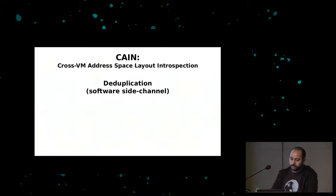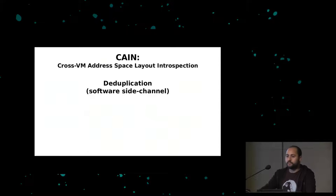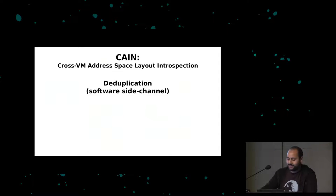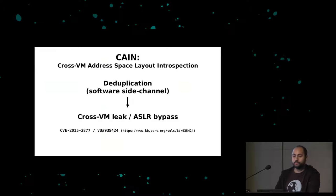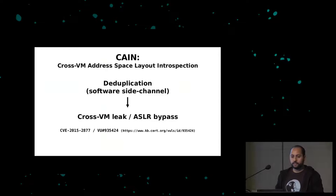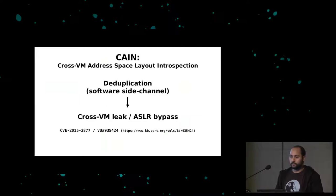CANE is Cross-VM Address-based Layout Introspection. It only relies on deduplication and the idea is to use it to break ASLR. You have a VM running next to you, memory deduplication is enabled, and you will be able to find out the base address of NTDLL, for example, in the other VM.